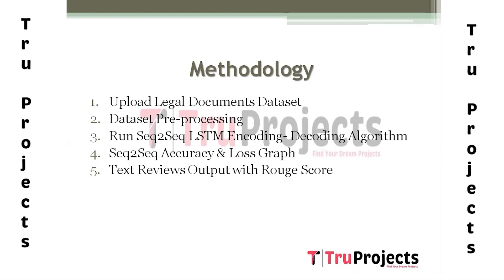The fifth module is 'Text Review Output with ROUGE Score.' By this module we will read some text samples, apply the Seq2Seq model to predict summary, and then calculate the ROUGE score using the original summary and predicted summary.